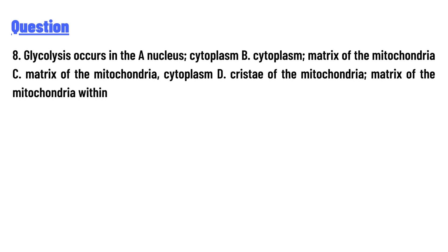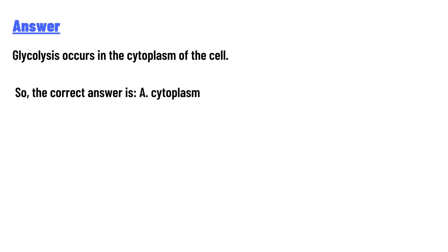C. matrix of the mitochondria; cytoplasm D. cristae of the mitochondria; matrix of the mitochondria. The answer to the question is: Glycolysis occurs in the cytoplasm of the cell. So the correct answer is A, cytoplasm.